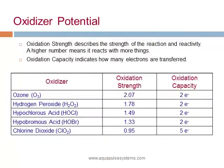Different oxidizers have different strengths. The higher the oxidation strength, the more aggressive and reactive it is, and the lower its stability. Oxidation capacity is the amount of ORP it is able to create. Ozone is the most powerful and least stable, followed by peroxides and then hypochlorous acid. Chlorine dioxide is lower in oxidation strength, so it is not as corrosive or aggressive, yet a small amount can produce a high ORP due to its high oxidation capacity.